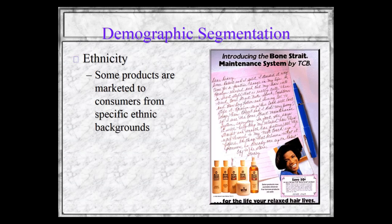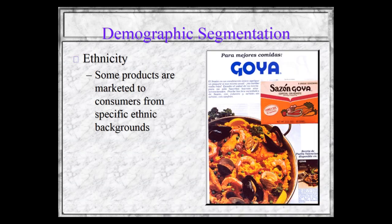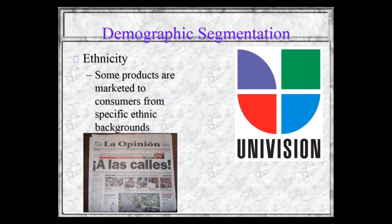Some products are marketed to consumers from specific ethnic backgrounds. Here is a product introducing the Bone Straight Maintenance System by TCB, targeting an African-American consumer. That's easily done with media that specifically targets African-American consumers — Ebony and Jet magazines, and BET cable channel. Clearly some products are also marketed to Hispanic consumers, and media options like Univision or Spanish language newspapers such as La Opinion in Los Angeles make that available.